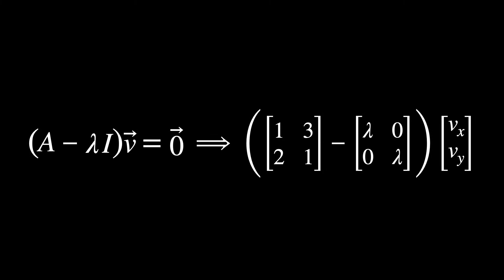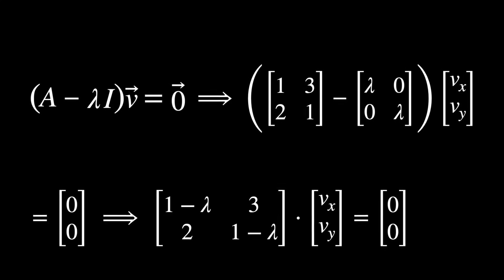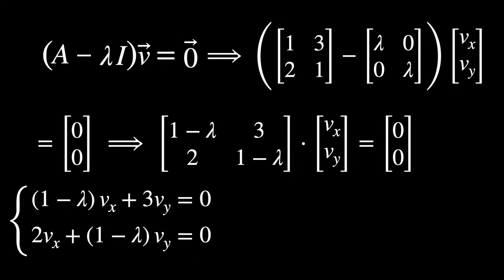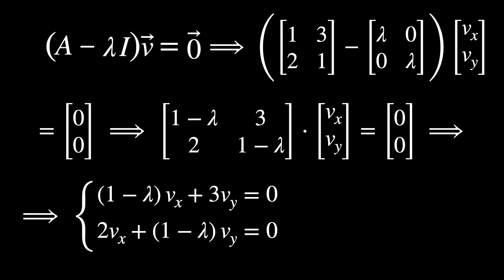So using this equation and working on the math here, we'll end up with a multiplication between a matrix and a general vector with components Vx, Vy. And then we find that it actually gives us a system with linear equations in terms of our eigenvalues, lambda.